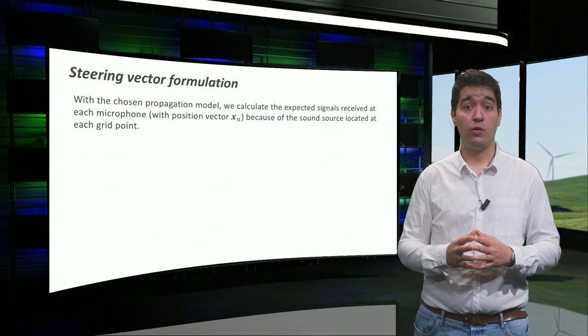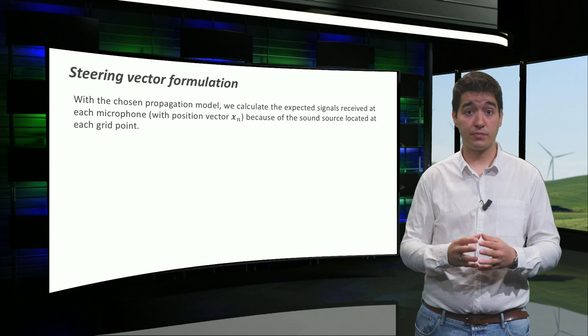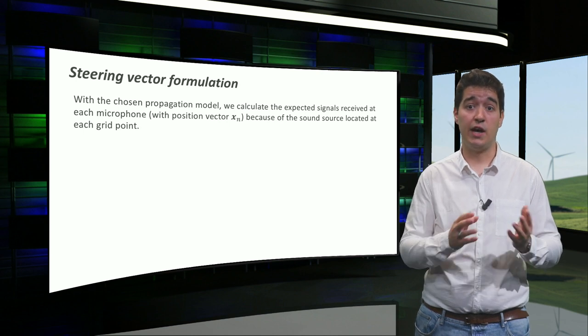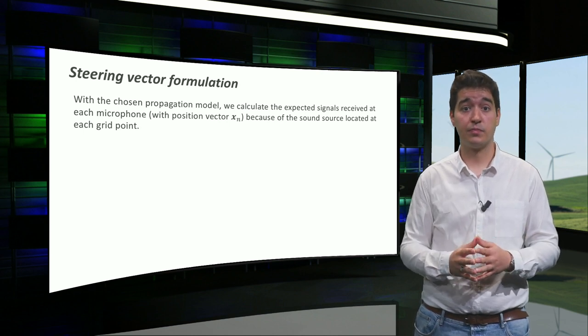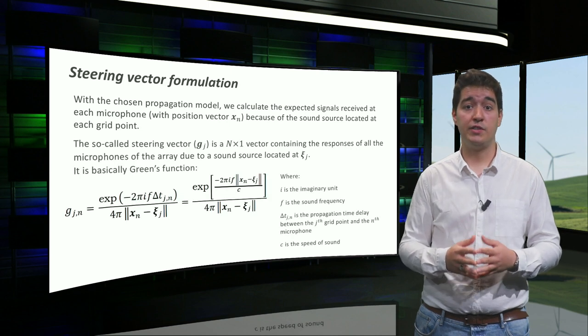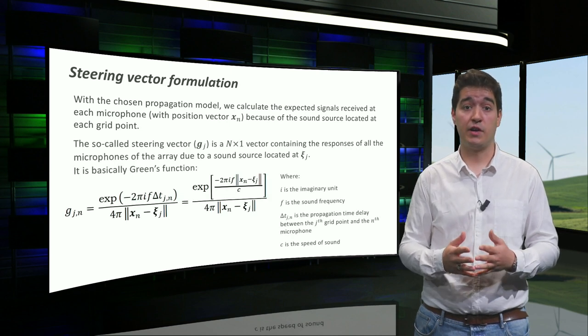For each grid point, we calculate the expected signals that would be recorded by each microphone, if there was actually a real source on that location. We do so by using the so-called steering vectors, which are basically Green's functions.